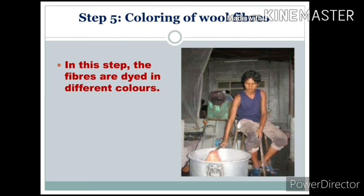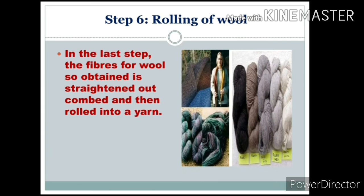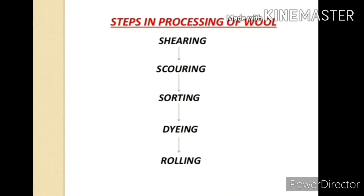The fifth step is coloring of wool fiber, also called dyeing. In this step, the fibers are dyed in different colors. The sixth and last step is rolling of wool, where the fibers of wool are straightened out, combed, and then rolled into yarn. The steps in the process of wool are: shearing, scouring, sorting, dyeing, and rolling — with these steps we obtain wool fiber.